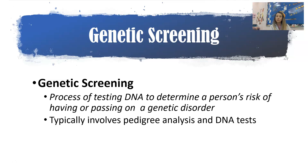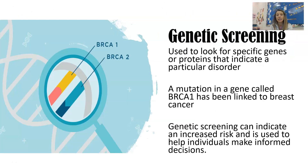That data can be used for genetic screening — a process of testing DNA to determine a person's risk of having or passing on a genetic disorder. Genetic counselors do genetic screening by analyzing pedigrees or running specific DNA tests to help people make informed decisions. We're looking for specific genes or proteins that indicate an increased likelihood of a certain disorder, like the BRCA gene linked to breast cancer. Genetic screening can indicate whether someone has an increased risk and help them make informed decisions about the future.